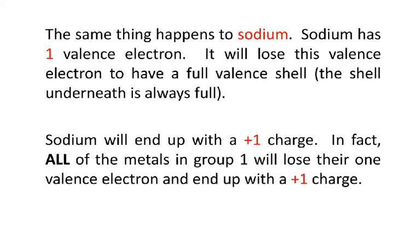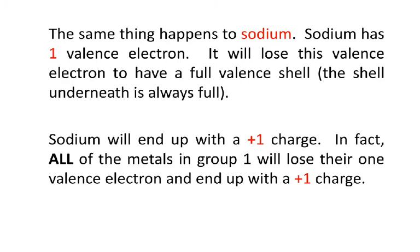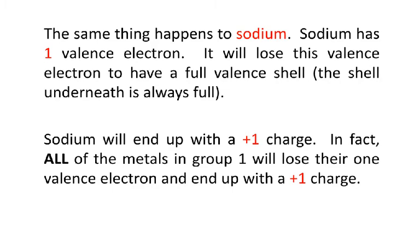The same thing happens to sodium. Sodium has one valence electron, so it's going to lose its valence electron to have a full valence shell. The shell underneath is always full anyway, because it fills up a shell before it goes into the next one. Sodium will end up with a plus one charge. In fact, all of the metals in group one will lose their one valence electron and end up with a plus one charge. So get out your periodic tables and above group one, put a plus one — that way you'll always know group one has a plus one charge.